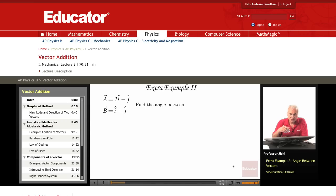Welcome. I will discuss now extra example number two. Here I'm given two vectors, A and B, and I want to find the angle between them.